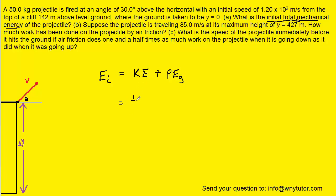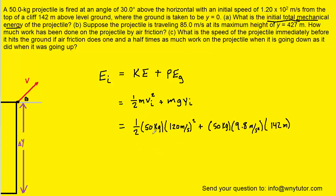The initial kinetic energy would be one-half times the mass times the initial speed squared, and the initial potential energy would be mass times g times the initial height. We know the mass is 50 kilograms, the initial speed is 120 meters per second, and the initial height is 142 meters. Plugging that all into your calculator, you get approximately 4.3 times 10 to the power of 5 joules — the correct answer to part A.